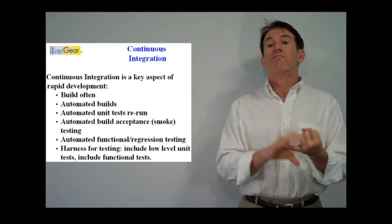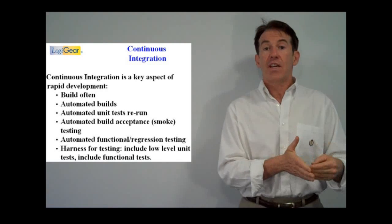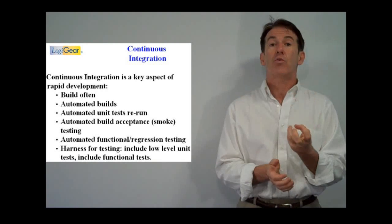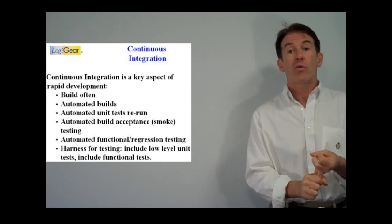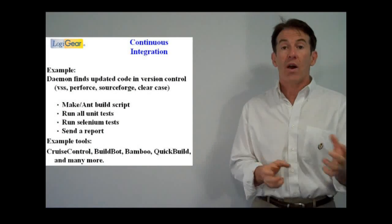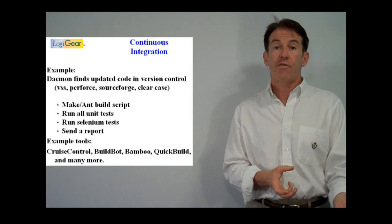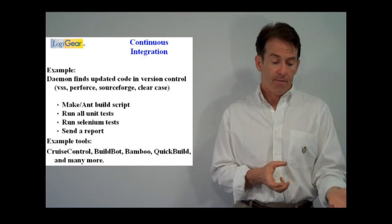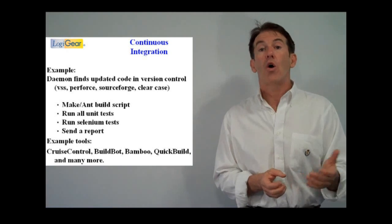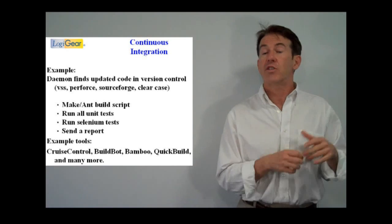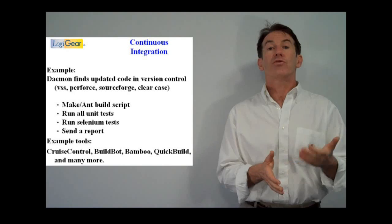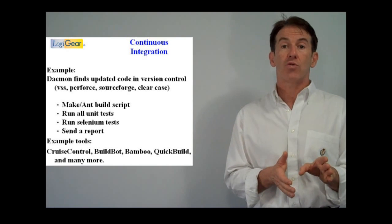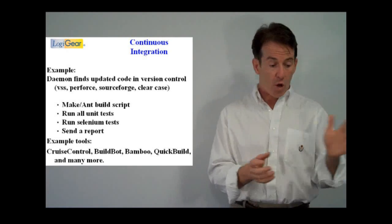It's a tool that ties into your source control that every time we get a new piece of code checked into SourceSafe or you can have it scheduled every morning or every night or do daily builds or two builds a day, however you want to schedule it. A continuous integration tool will rerun all of your unit tests. It'll have an interface with JUnit where it can rerun every single one of your unit tests. It'll have an interface that you can have it run every one of your GUI tests.